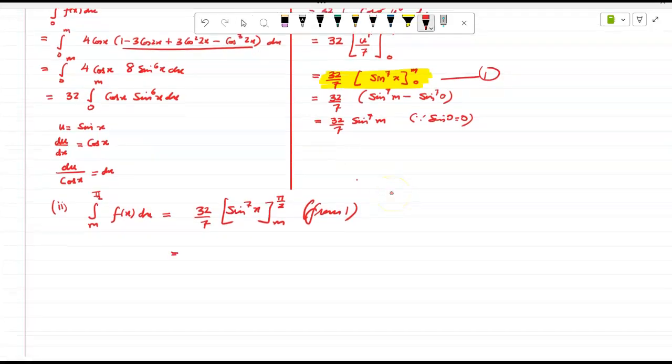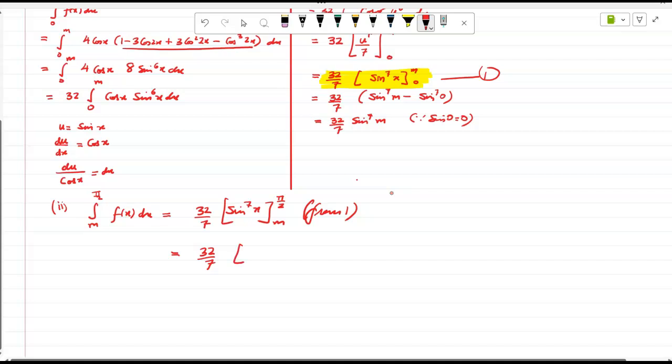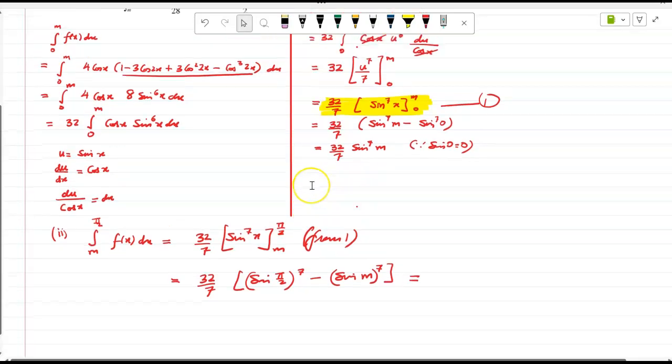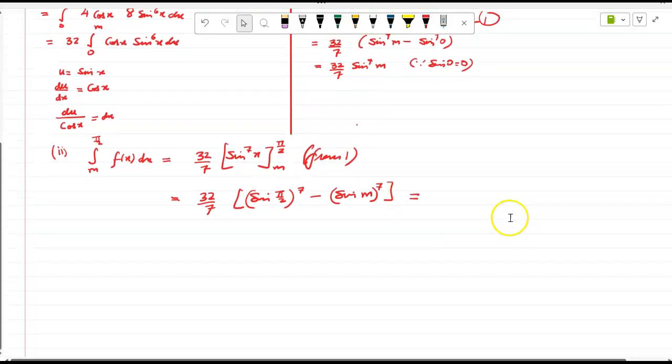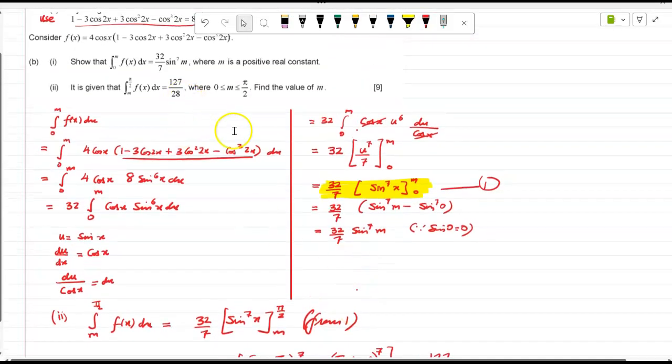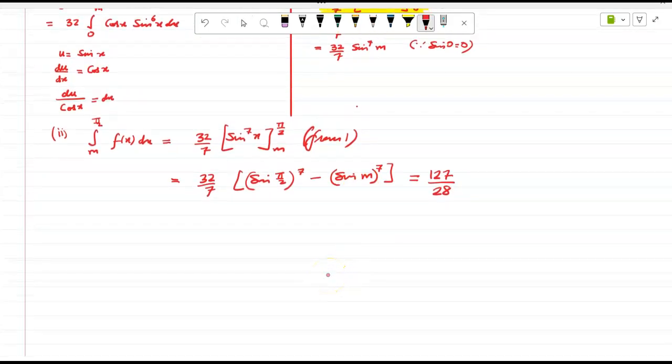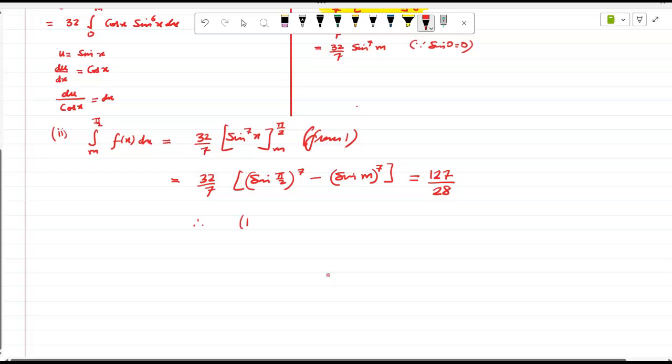Now what do you do? So 32 by 7, so sin pi by 2 raised to 7, minus sin m raised to 7, and this is equal to what? 127 over 28. So 32. Sin 90 is 1. So therefore, so 1 raised to 7 minus sin m raised to 7.